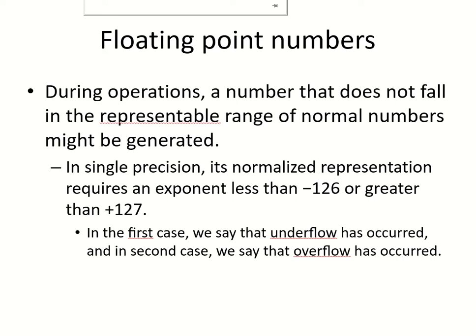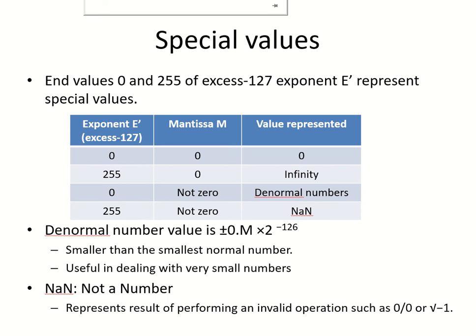If the number is very small, we say that an underflow has occurred. And if the number is very large, we say that an overflow has occurred. These numbers are not representable by the normal range of numbers.